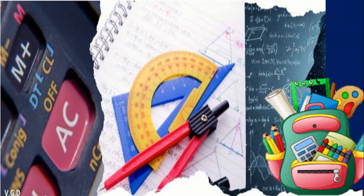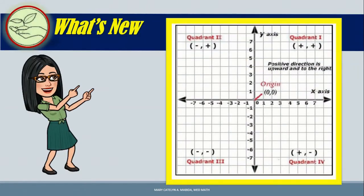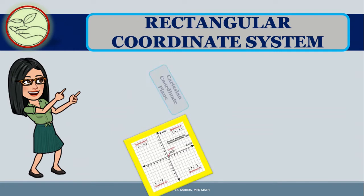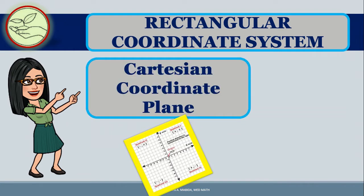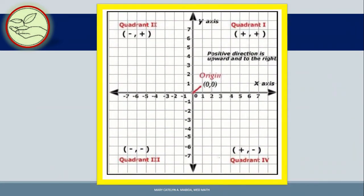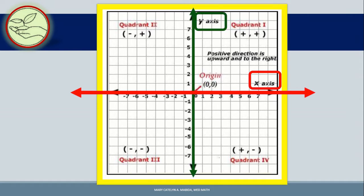This time, let's check out some grid. Look at the grid at the right. This is the rectangular coordinate system, or the Cartesian coordinate plane. It is named in honor of René Descartes, a French mathematician who developed the Cartesian plane in the 17th century. The Cartesian plane is formed by two lines that intersect at right angles. The horizontal number line is the X-axis, and the vertical number line is the Y-axis. The point where the axes meet is called the origin, whose coordinates are (0, 0).